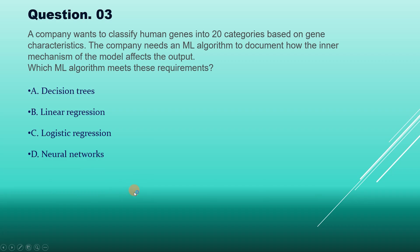The correct answer is option A, decision tree. You may have been thinking about logistic regression, but the correct answer is decision tree because decision trees can handle multi-class classification problems. This makes it suitable here since there are 20 distinct classes.